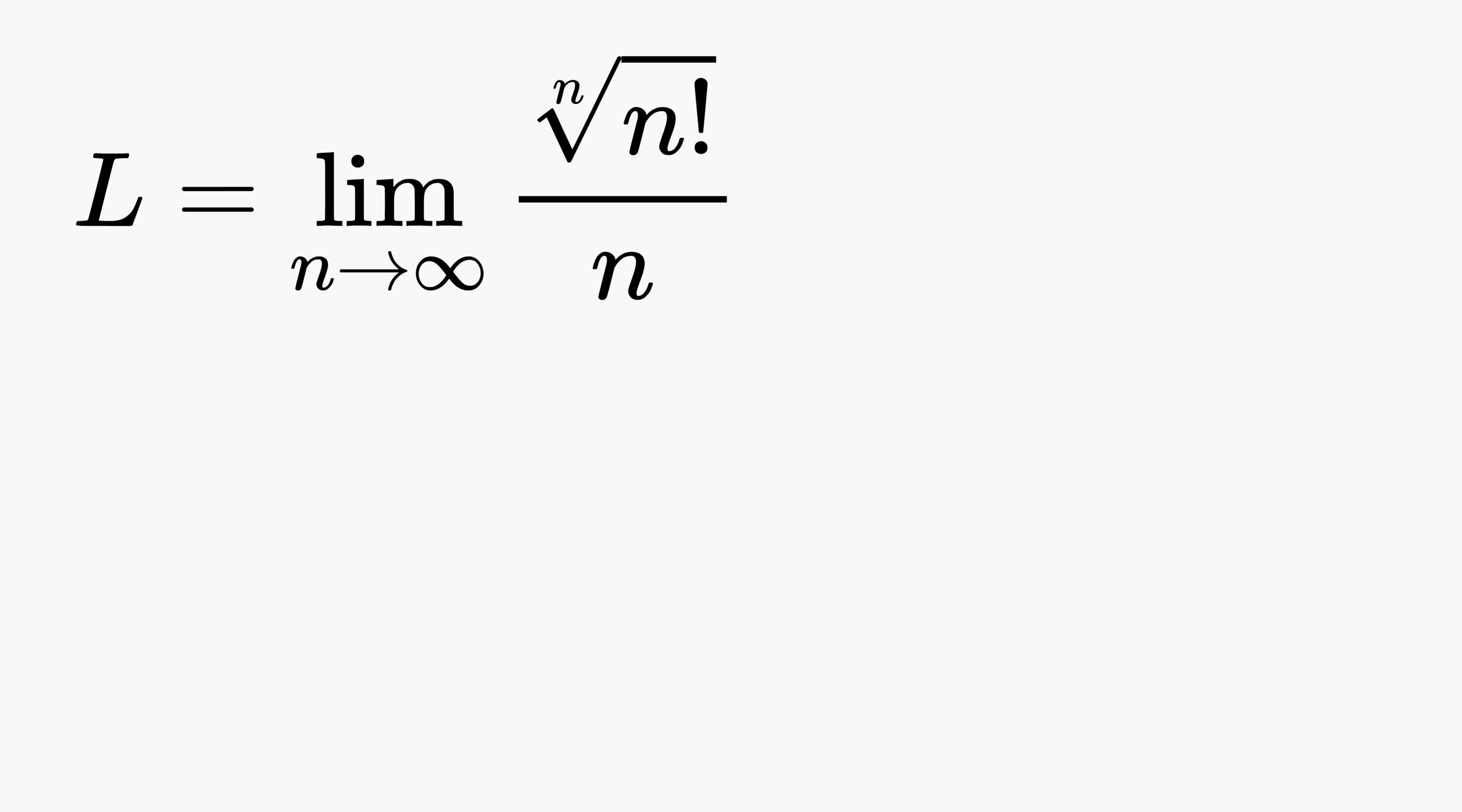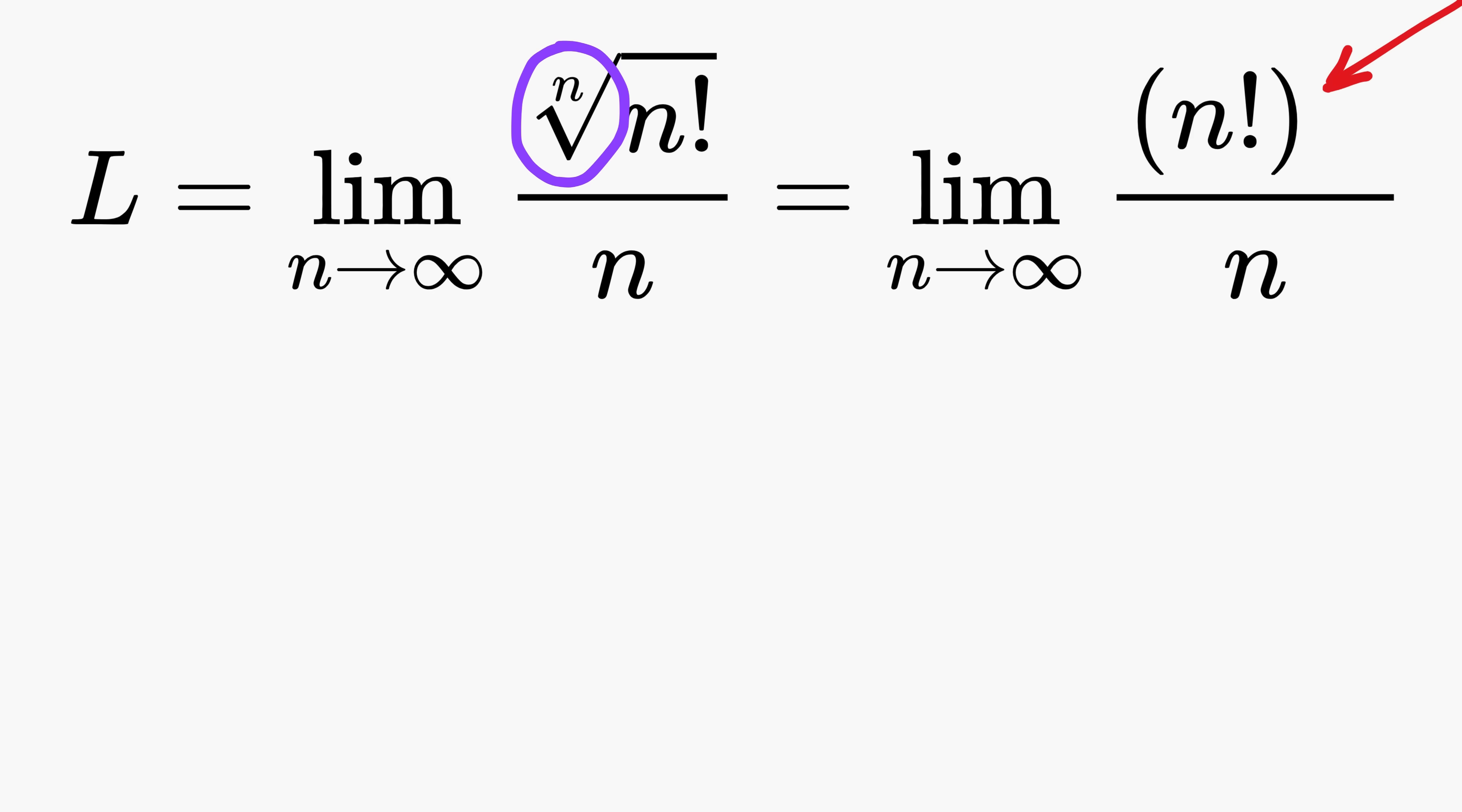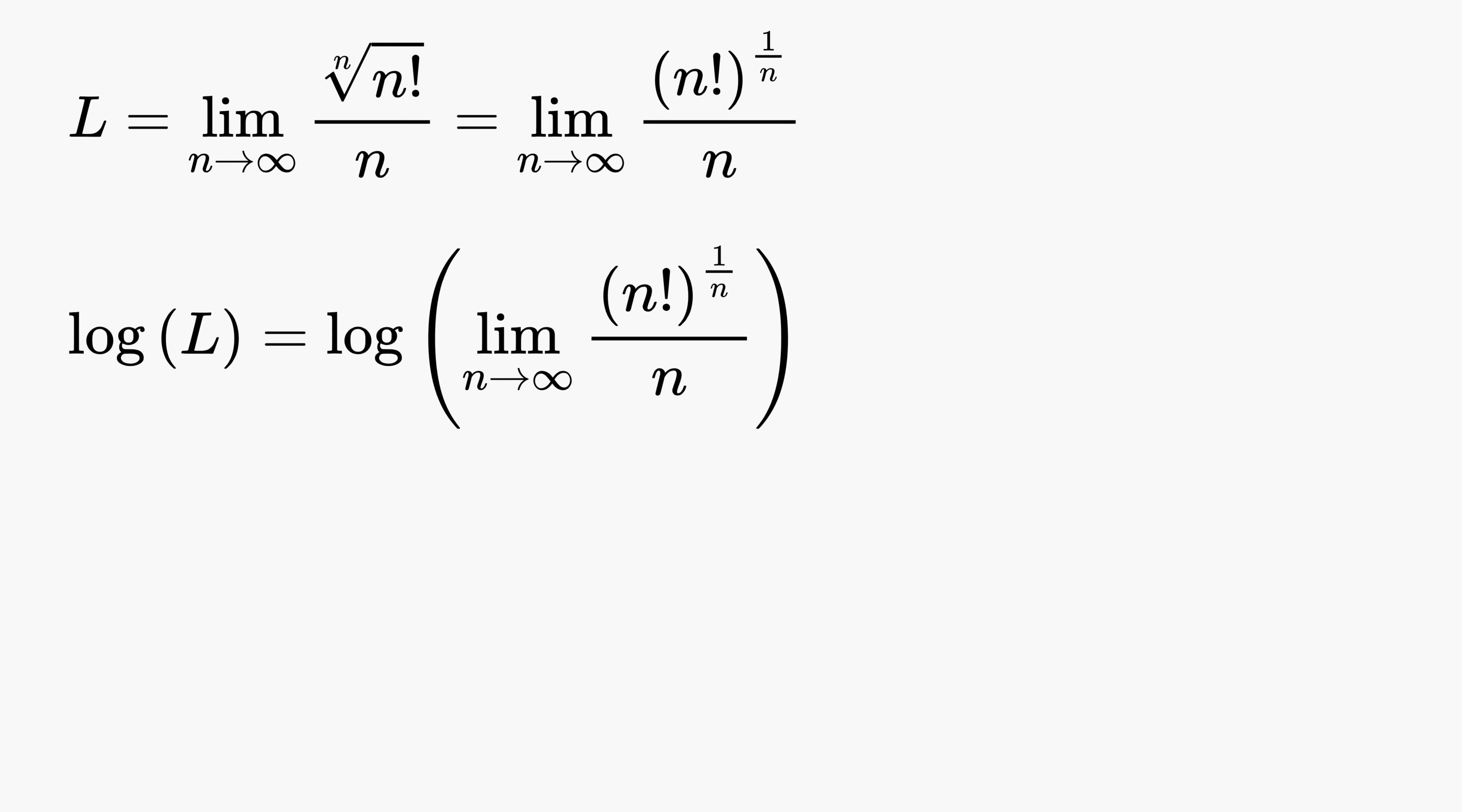The first thing we do is rewrite this nth root as an exponent or power 1/n. After doing that, we take the natural logarithm on both sides of the equation involving L. This gives us the natural log of L equal to the natural log of the entire limit expression.